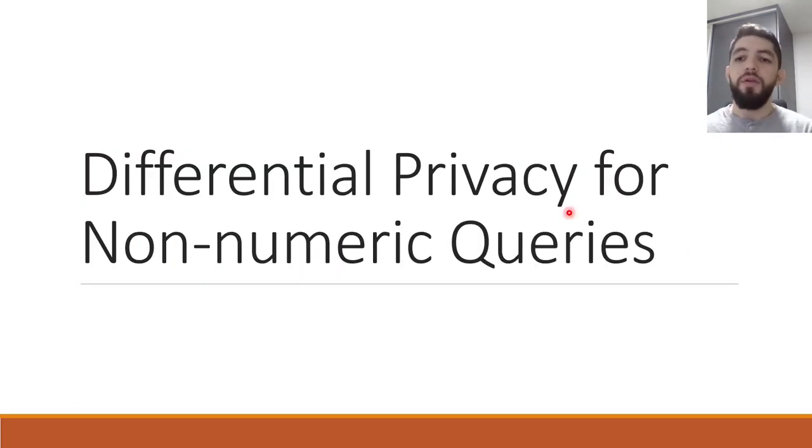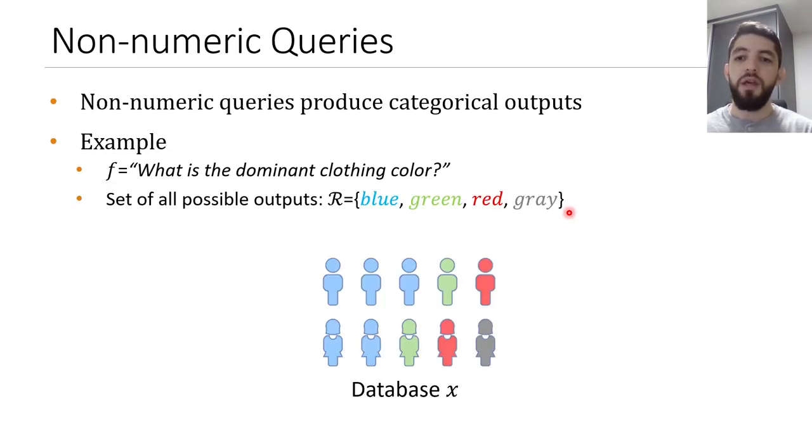Now we show how differential privacy is applied to non-numeric queries. Non-numeric queries are queries that produce a categorical output. For example, the question, what is the dominant clothing color, is a non-numeric query. The range of this query is blue, green, red, and gray. Those are the possible outputs for this query.